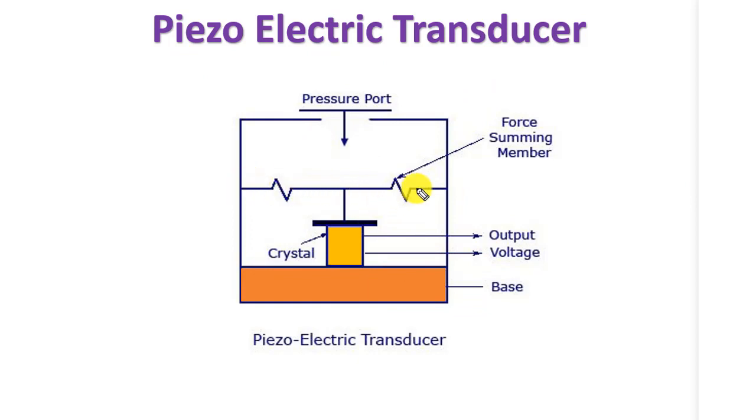When force is applied to the summing member, pressure acts on the piezoelectric crystal material. The pressure creates stress in the crystal, and this mechanical stress generates an output voltage. The amount of voltage depends on the pressure applied. When pressure is applied, current is generated, which is equal to the mechanical energy converted to electrical energy.